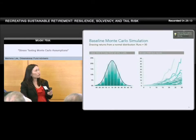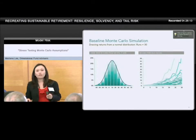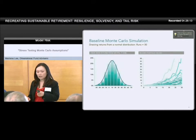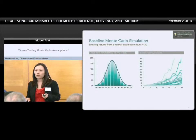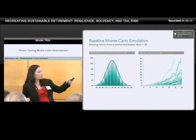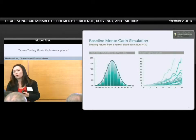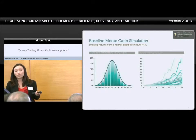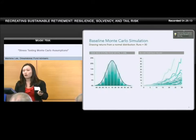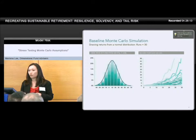After just 30 runs, we now have 30 different portfolio outcomes. The goal is to get a distribution of portfolio values at the end, and that's how we can quantify the impact of return risk on ending portfolio values.